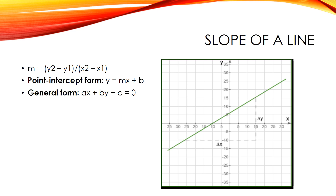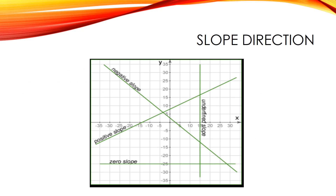Slope direction: the slope of a line can be positive, negative, zero, or undefined. For a positive slope, Y increases as X increases, so the line slopes upwards to the right. The slope will be a positive number. For example, a line with a slope of about +0.3 goes up about 0.3 for every step of 1 along the X axis.